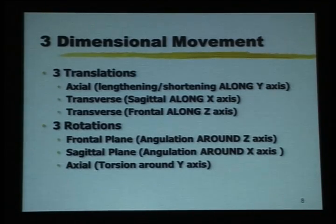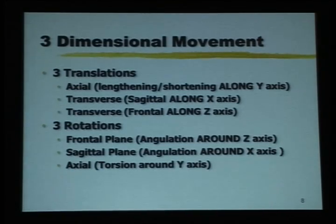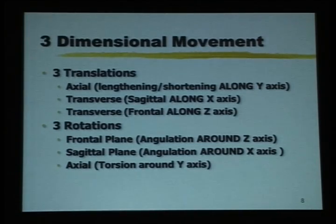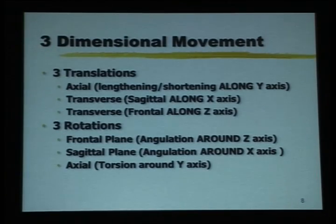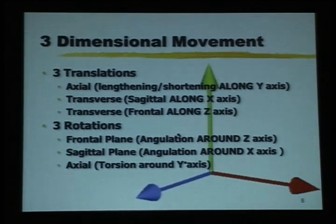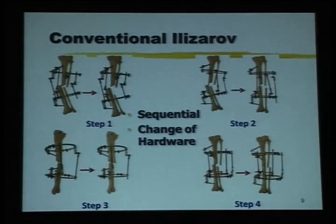The only two movements in three-dimensional space are translation and rotation. Angulation is actually a rotation — we will see that. You have three translations and three rotations along these three axes.